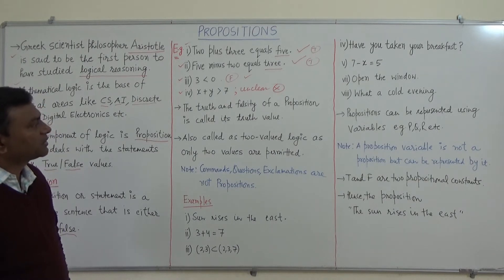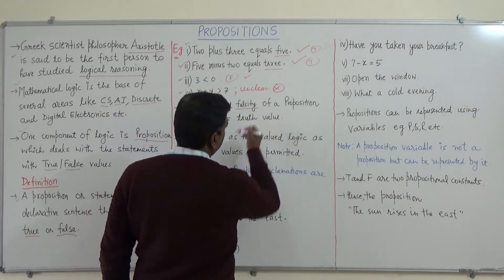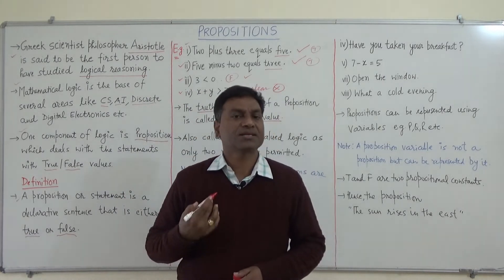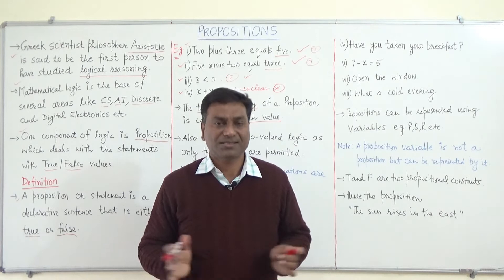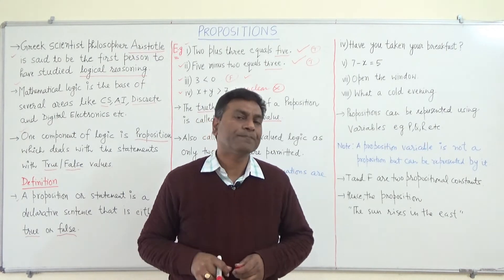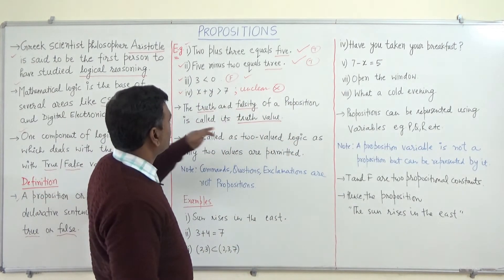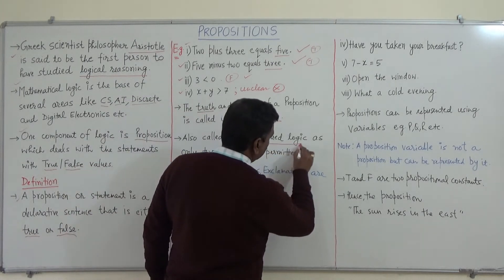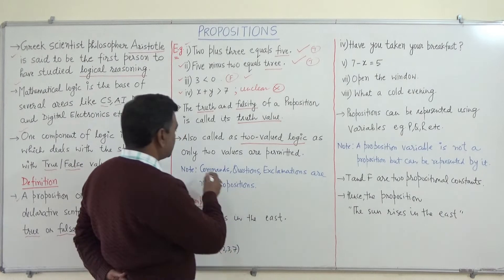The truth or falsity of a proposition is called its truth value. This can be shown using truth tables for various connectives such as conjunction, disjunction, conditional, biconditional, and negation. Because propositions have only two possible values — true or false — this system is also called two-valued logic, as only two values are permitted.